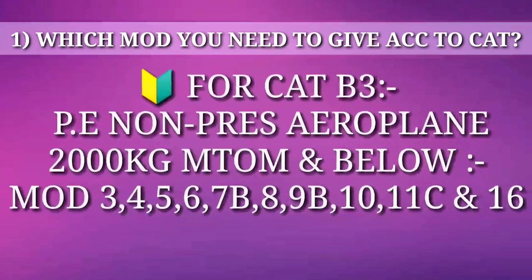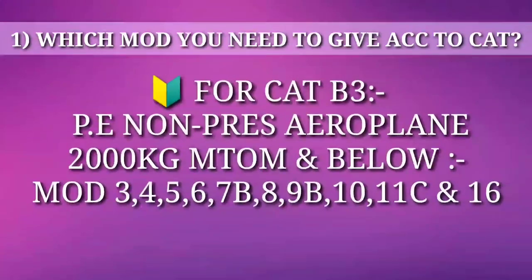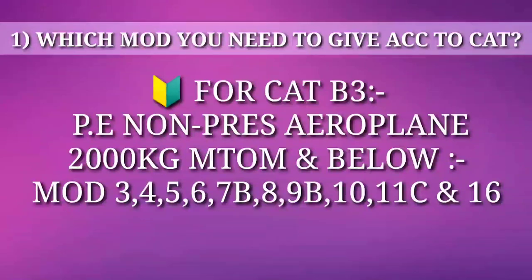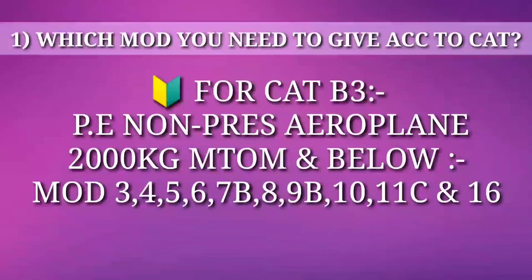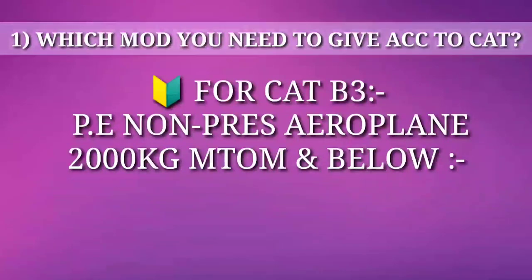At last, for category B3 — piston engine, non-pressurized aeroplanes, 2000 kg MTOM and below — they need to give modules 3, 4, 5, 6, 7B, 8, 9B, module 10, 11C and 16.